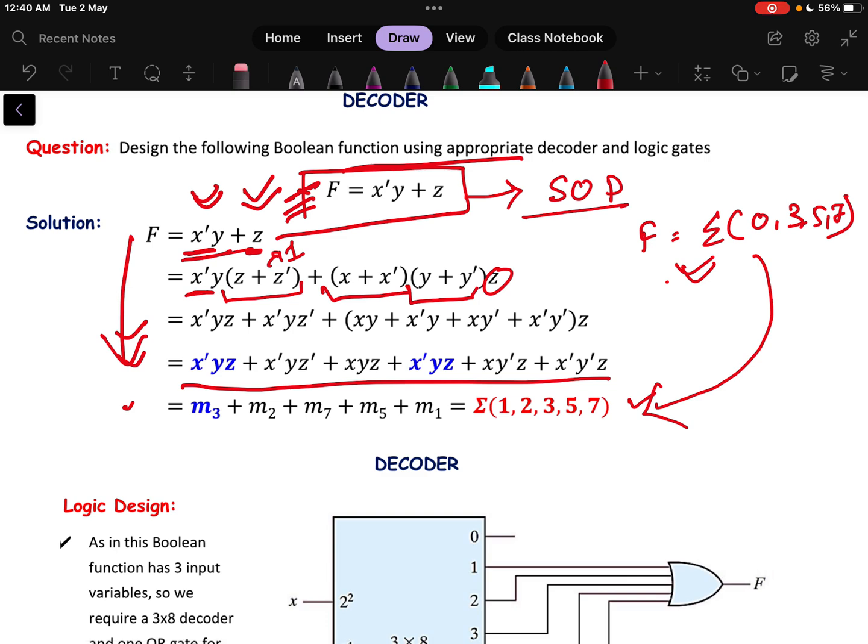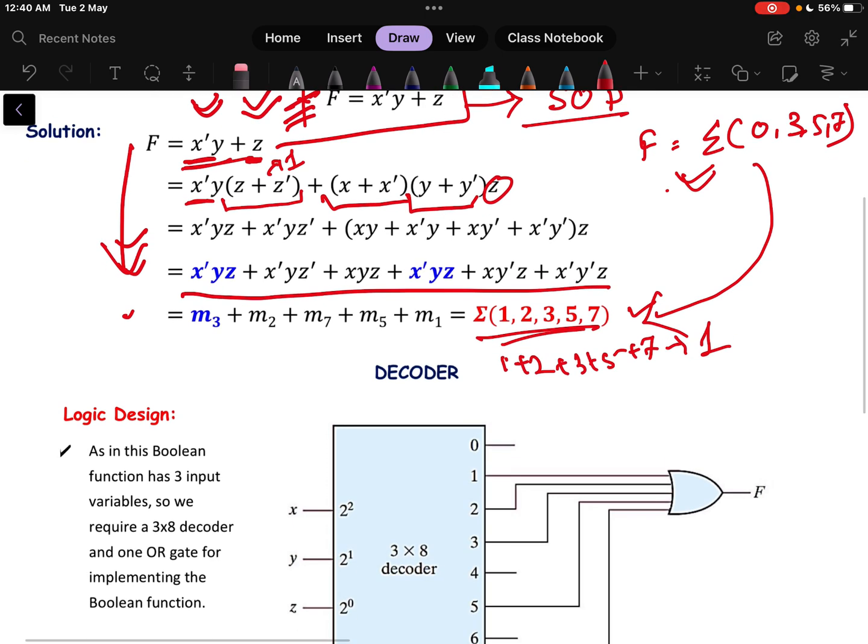According to this Boolean expression that we got, the SOP format here, that means 1st term plus 2nd term plus 3rd term plus 5th term plus 7th term, all in this value equals to 1.